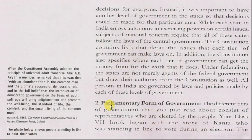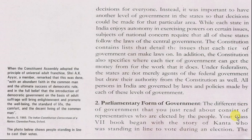The second key feature of the Indian Constitution is the parliamentary form of government. The different tiers of government consist of representatives who are elected by the people. Your Class 7 book began with the story of Kanta, who was standing in line to vote during an election.